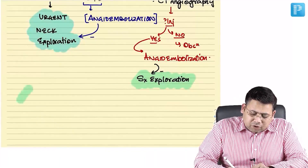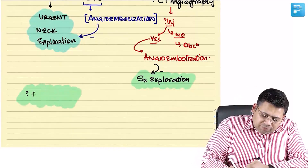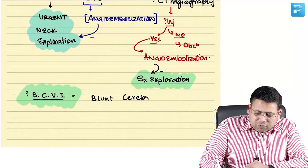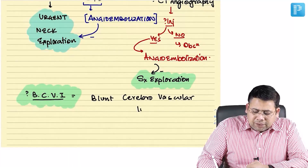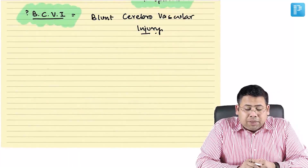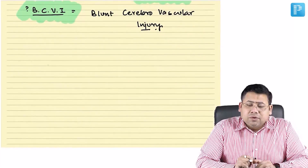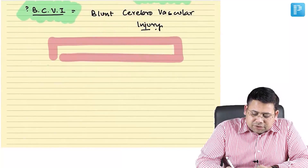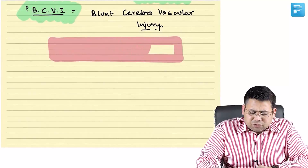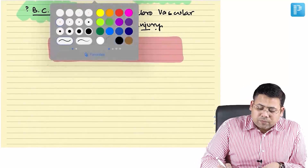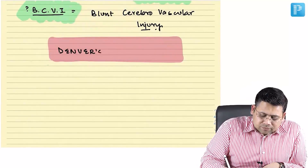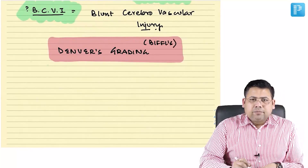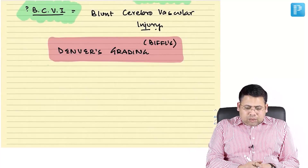There is a category of injury associated with blunt trauma — BCVIs, which stands for Blunt Cerebrovascular Injuries. For blunt cerebrovascular injuries, we have a grading system that has been examined in entrance exams. It is known as Denver's grading, also called Biffl's grading.